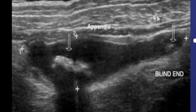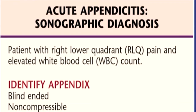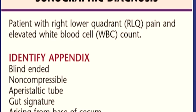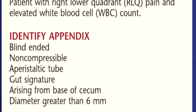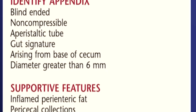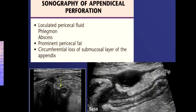Supportive signs include the appendicolith, cecal apical thickening, and hypervascularity seen on color Doppler. You should see a blind-ending pouch — that is the peri-appendiceal fat stranding. Identify the appendix as a blind-ending, non-compressible, non-peristaltic tube with gut signature, arising from the base of the cecum, with diameter greater than six millimeters. Supportive features include inflamed perientric fat, pericecal collections, and appendicoliths.